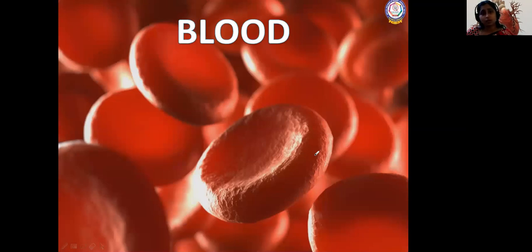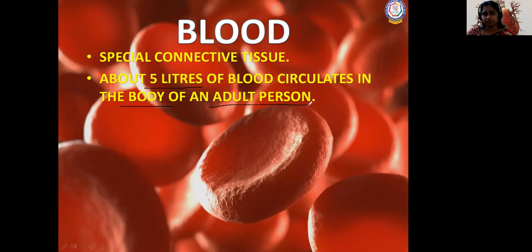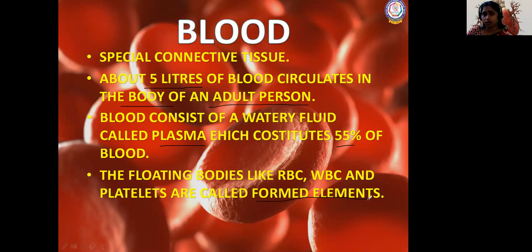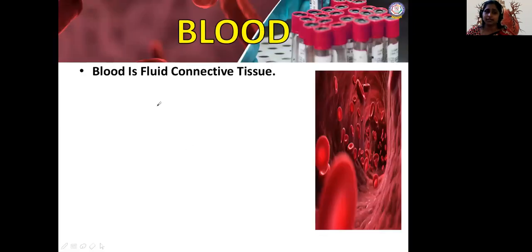Blood is a special connective tissue. About five liters of blood circulates in the body of an adult person. It consists of a watery fluid with different components: plasma (55%) and formed elements. The formed elements — the floating objects — are RBC, WBC, and platelets. Blood is slightly alkaline in nature with a pH of 7.4, since pH 7 is neutral, below 7 is acidic, and above 7 is alkaline. It is a fluid connective tissue.